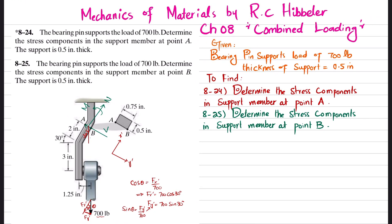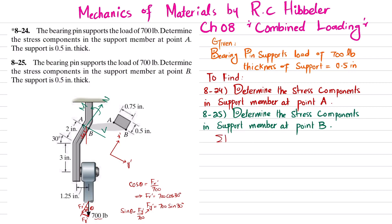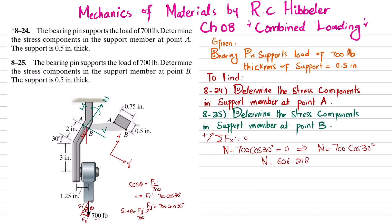Applying the first equilibrium equation — sum of forces along x-dash equals zero, with forces in that direction taken as positive — we get N minus Fx-dash equals zero, so N minus 700 cosine 30 degrees equals zero. Therefore N equals 700 times cosine 30 degrees, which gives N equal to 606.218 pounds. This is the axial force.